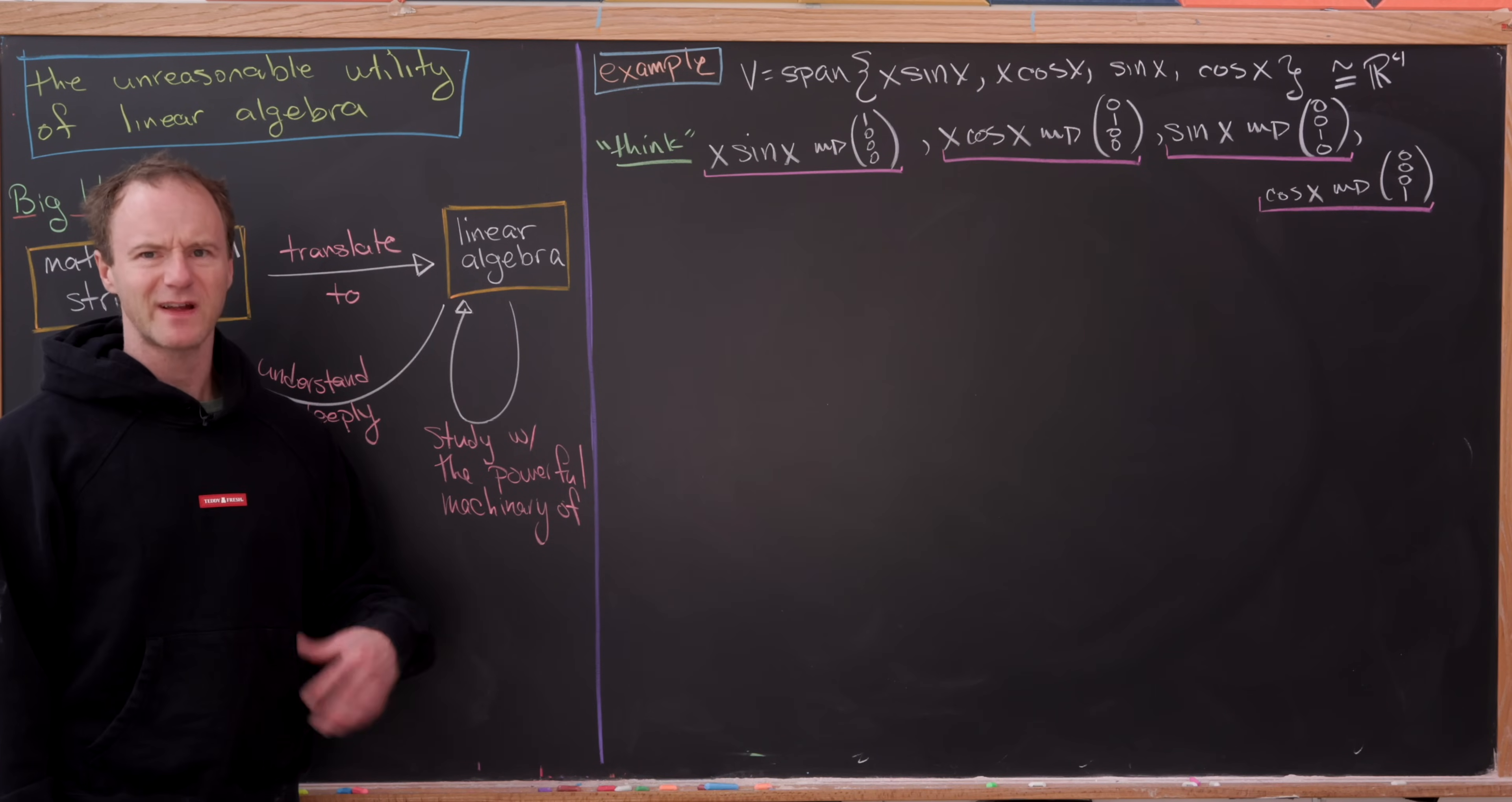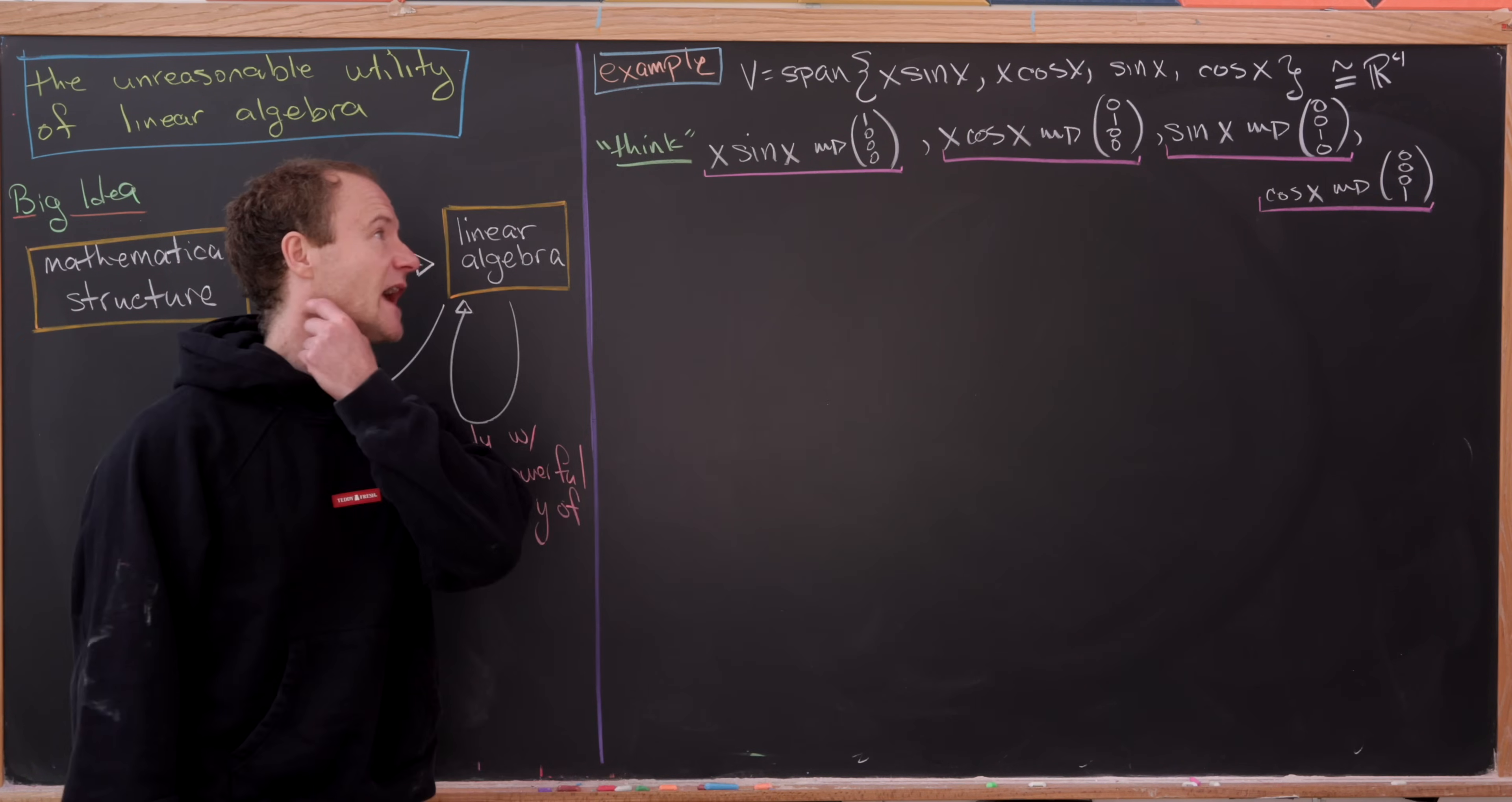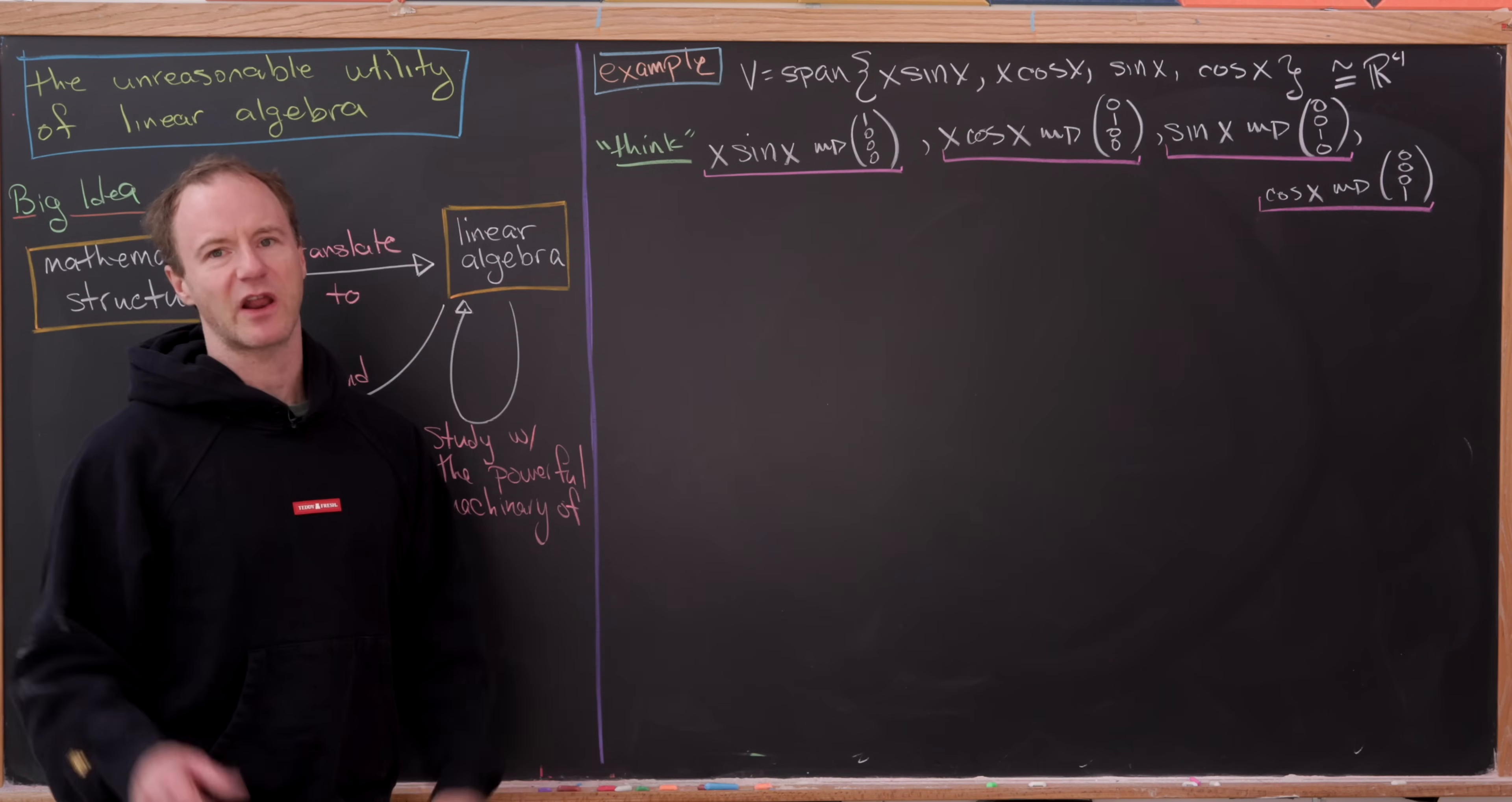So for our first setup, let's consider a four-dimensional real vector space, I'll call it V. And I'm going to span it by the following four functions. Let's recall the space of smooth functions makes a vector space, and this is simply a subspace of that larger vector space. So my four functions are x times sine x, x times cosine of x, sine x, and cosine of x.